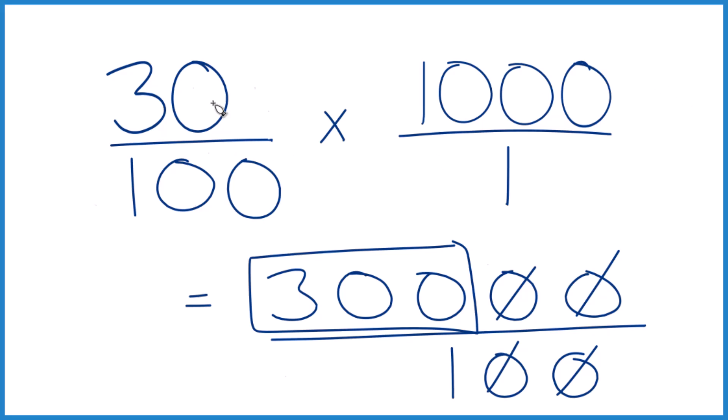The final way you can do this: divide 30 by 100, you'll get 0.3. Multiply that by 1,000, and you'll get 300.